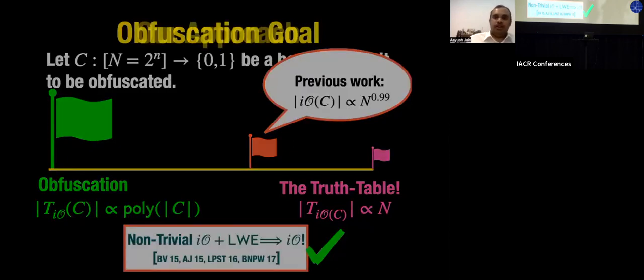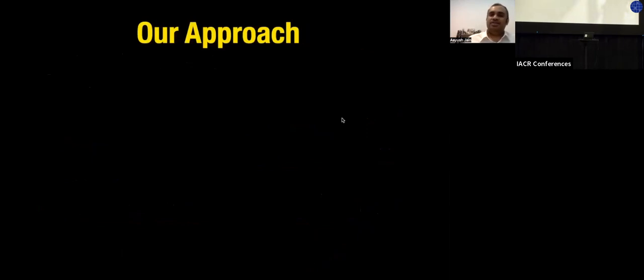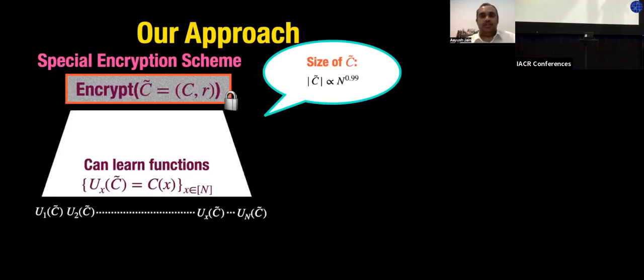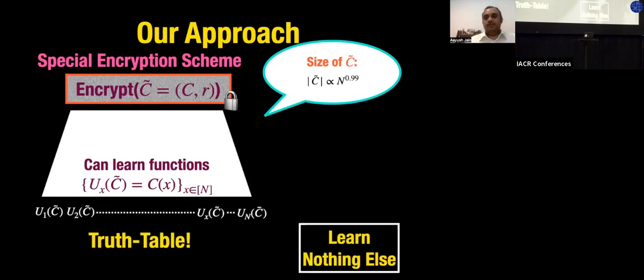Our approach: intuitively, a non-trivial IO is just some kind of encryption of a special input seed — maybe some circuits, some randomness. We want the size of the ciphertext C̃ to be small (like N^{0.99}) and the running time of the encryption also small. But it's not just any encryption: it must hide everything about circuit C except it magically lets you learn functions U_x(C̃) = C(x) for every x.